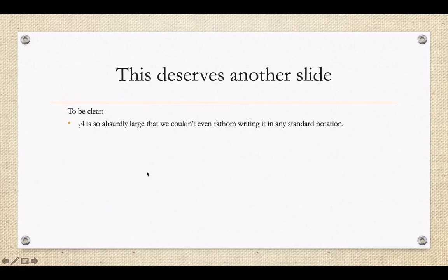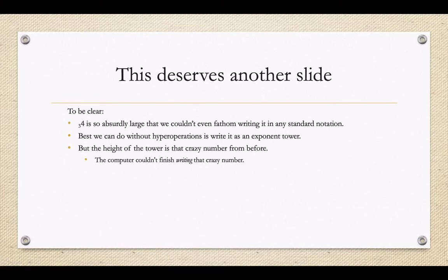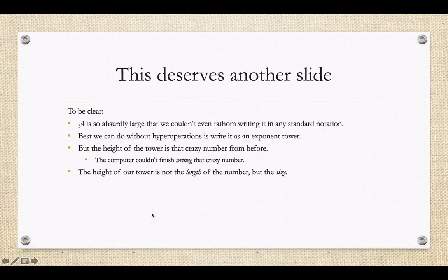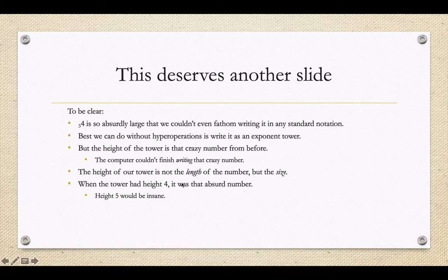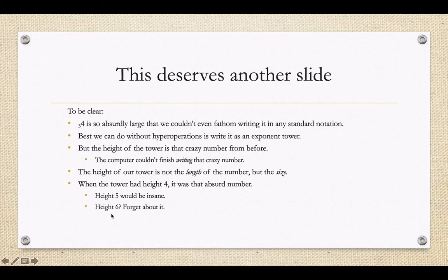What that means is we would have an exponent tower of 4s, and the height of that exponent tower would be the value of that pen-clicking number from the last video. To be clear, the height of this new tower is not the number of pen-clicks — the height is the value of that number that our computer couldn't even write with all those pen-clicks. That's the height of this new tower. If we did pentation with a 4 and a 3, we would get something so absurdly large you couldn't fathom writing it in any standard notation.